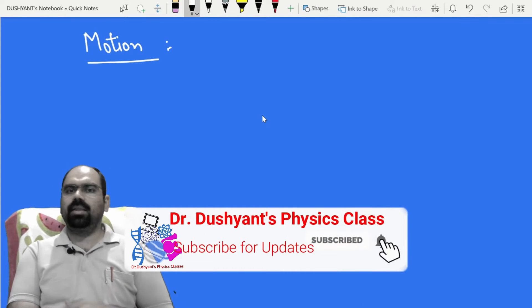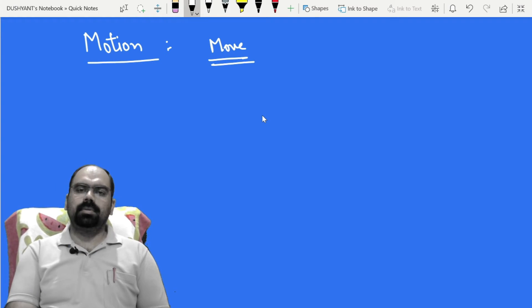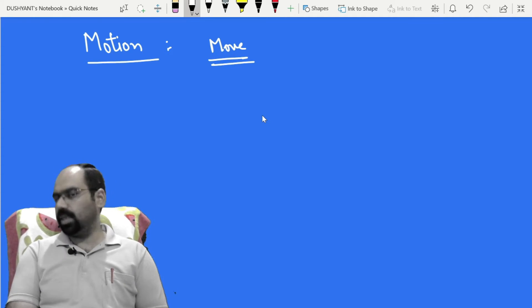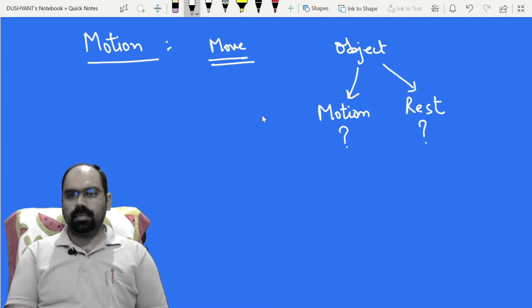When you look around yourself, you will see something that is moving. There are many things that are moving, many things that are not moving. Means, one body or one object can be in two states. Either it is moving, in motion, or it is at rest. Now, how do you say motion or rest? This is the biggest question. Because for one person, it may be an object in motion and for others, it may be in rest.